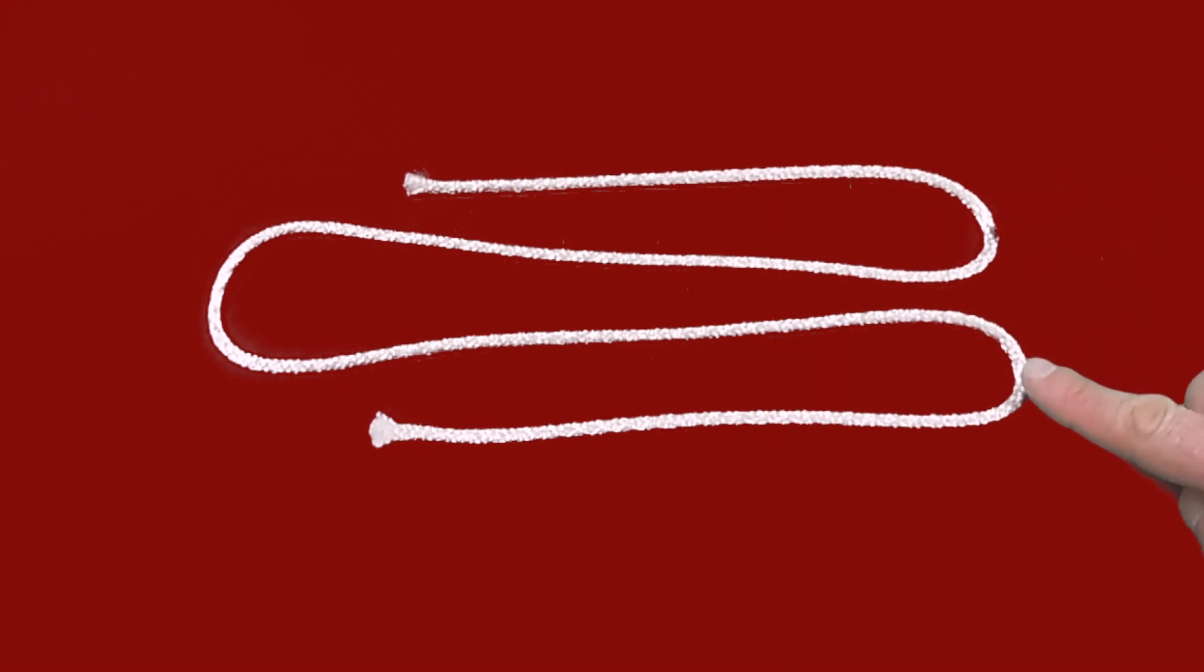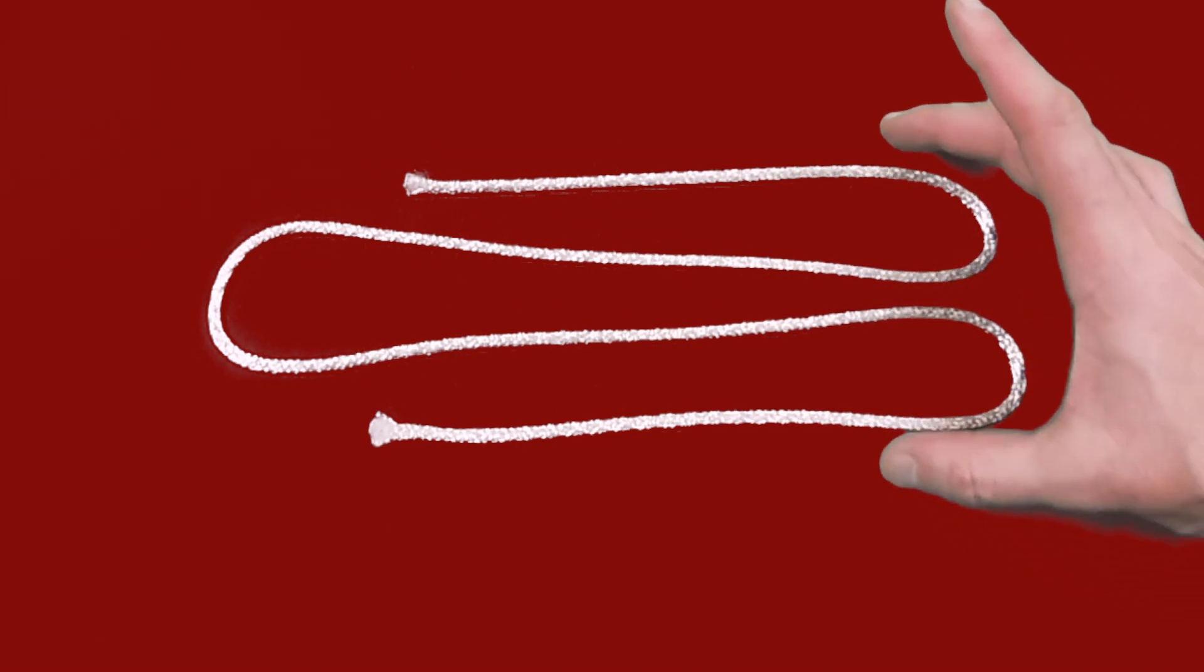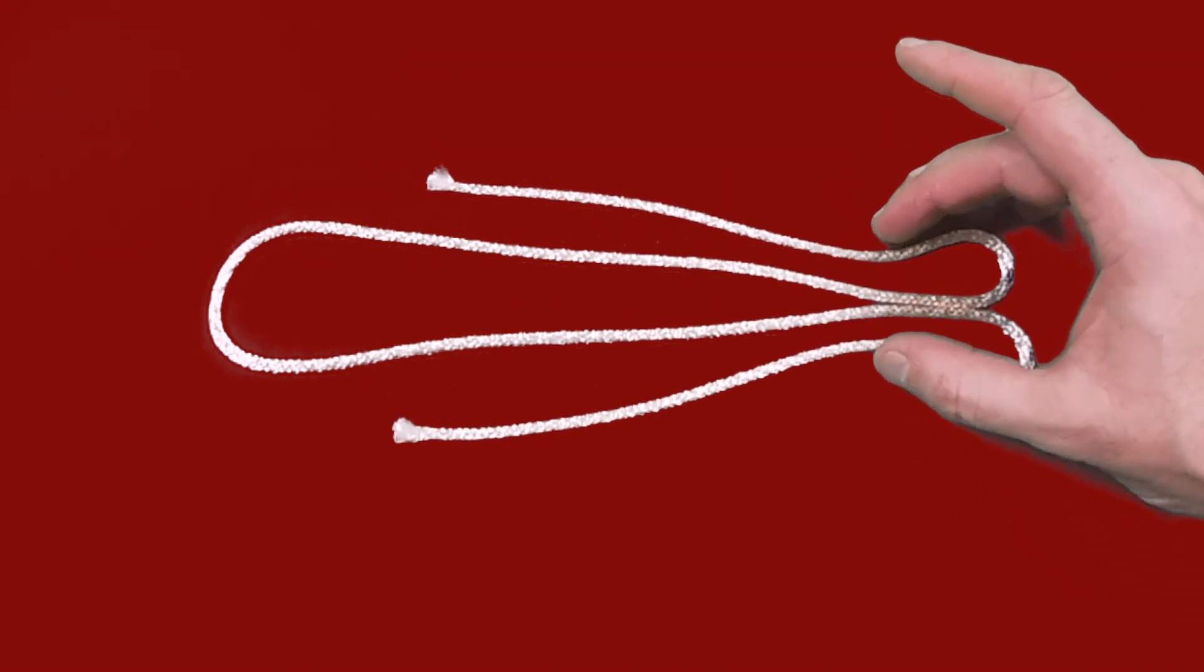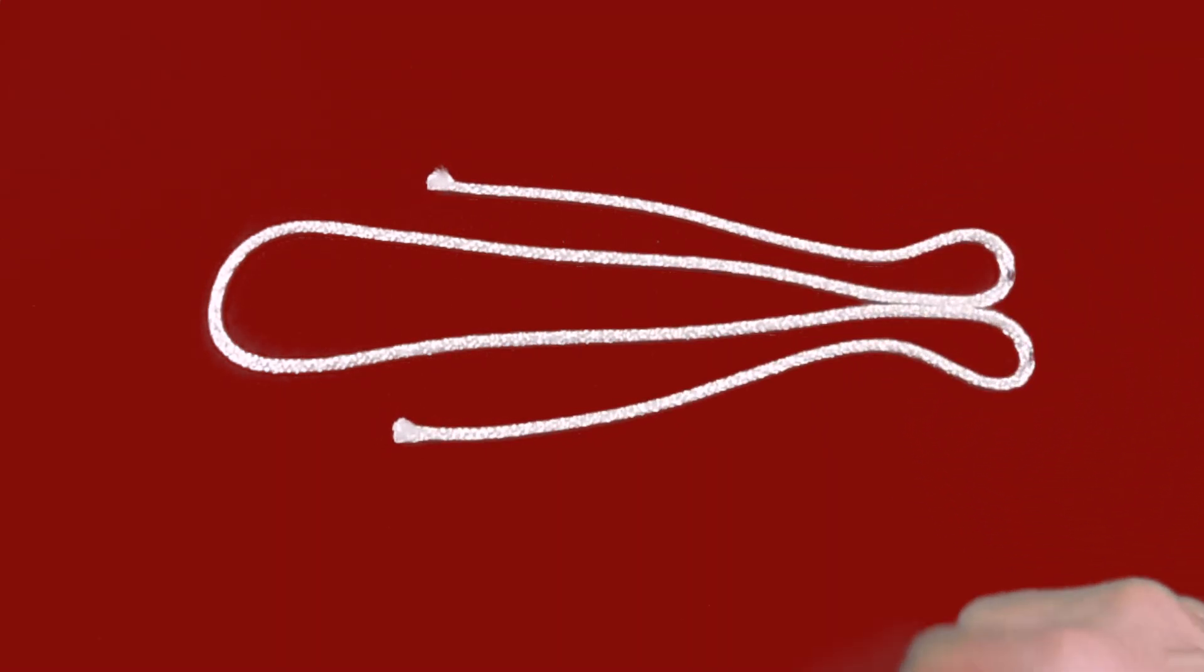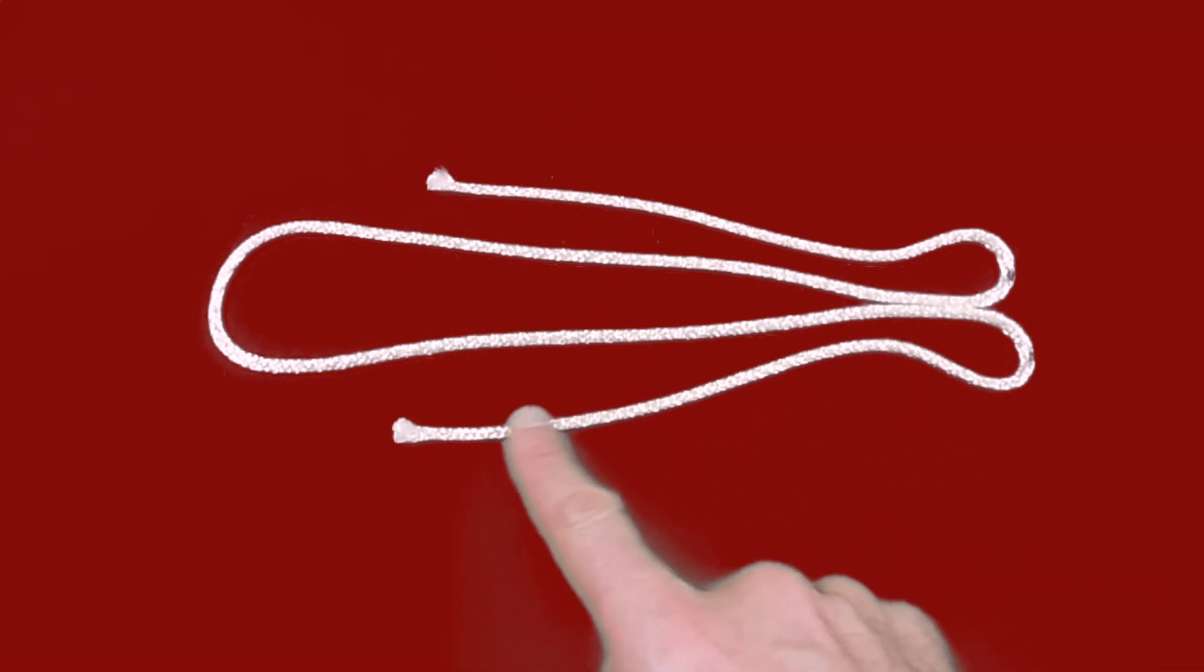You want to start by laying your line out flat on a table with 3 bites in the rope. Then make 2 marks at the end where the 2 bites are, which will be the end points of 2 brummel splices.